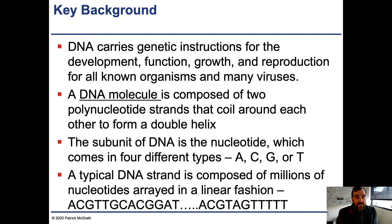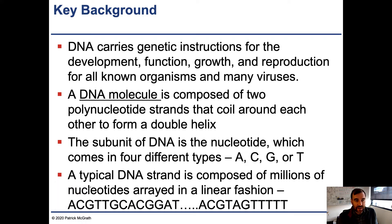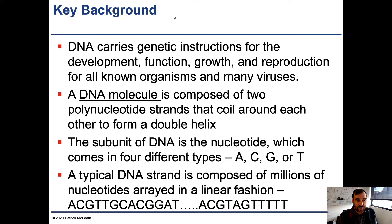Some key background for this chapter: one of the things you need to understand is DNA. You should understand DNA from material covered in high school or at least your intro bio class, which is a prerequisite for this class. DNA carries genetic instructions for the development, function, growth, and reproduction of all known organisms and many viruses. DNA is the blueprint — the reason a dog looks like a dog and a cat looks like a cat is because of differences in their DNA.